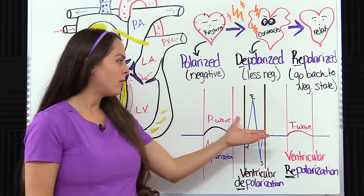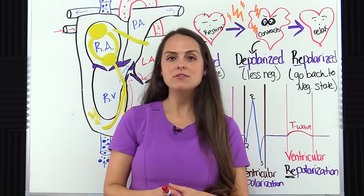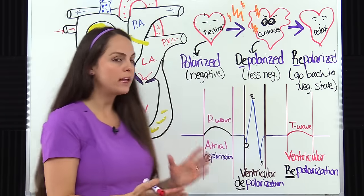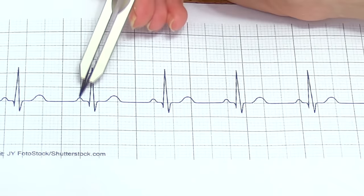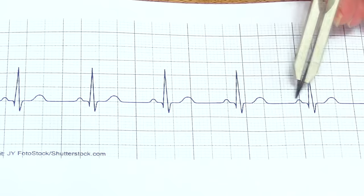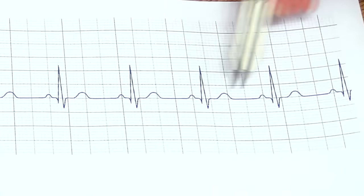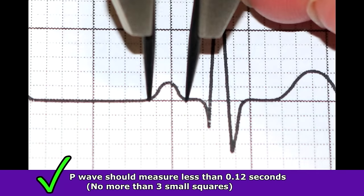Now that we've identified all the parts of the PQRST complex and where repolarization and depolarization are occurring, let's talk about how each part should measure and what it should look like, because this will help us analyze a rhythm. First, the P wave - P waves should always be present in a normal rhythm, with one P wave in front of one QRS complex. They should be upright, round, and their measurement should be less than 0.12 seconds - no more than three small squares. When looking at the P wave, count the squares it's taking up, remembering each small square represents 0.04 seconds.